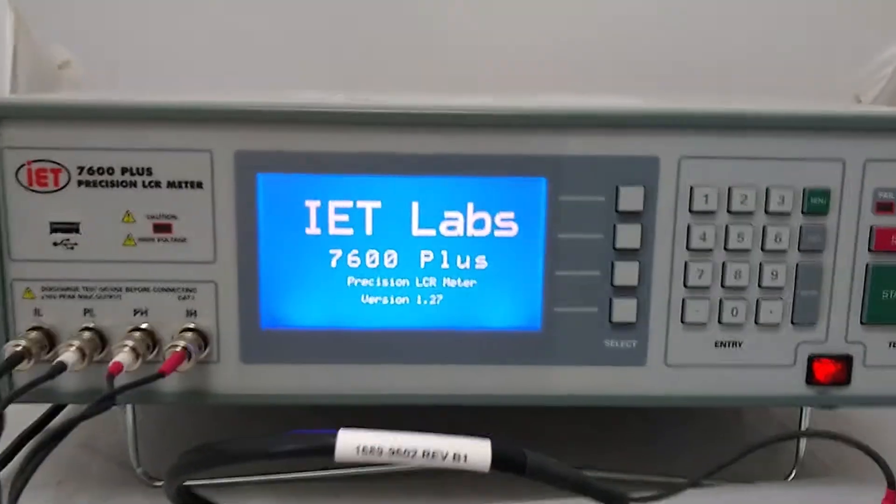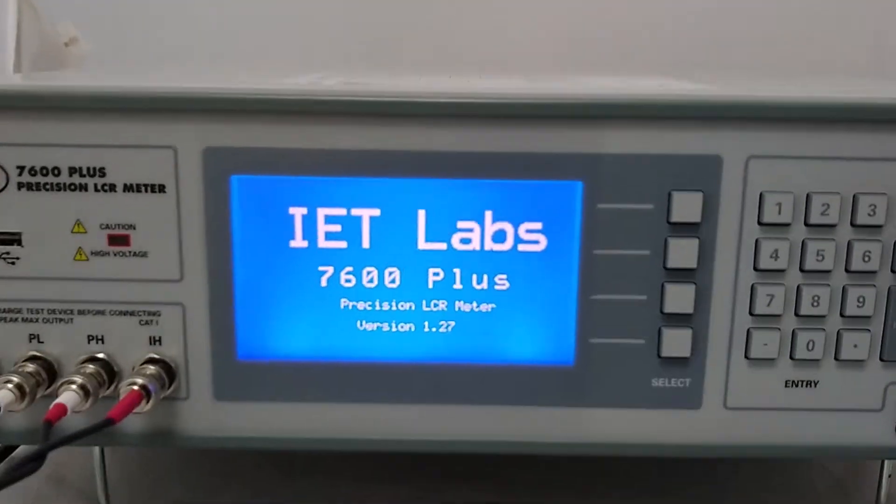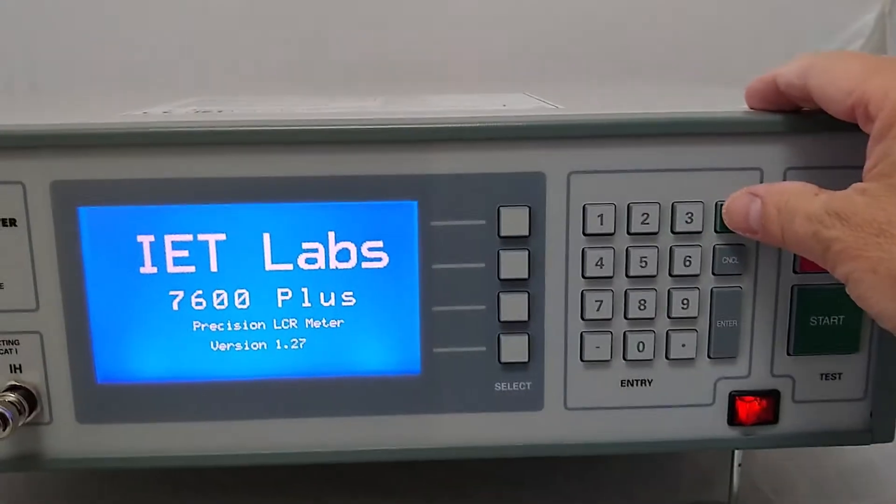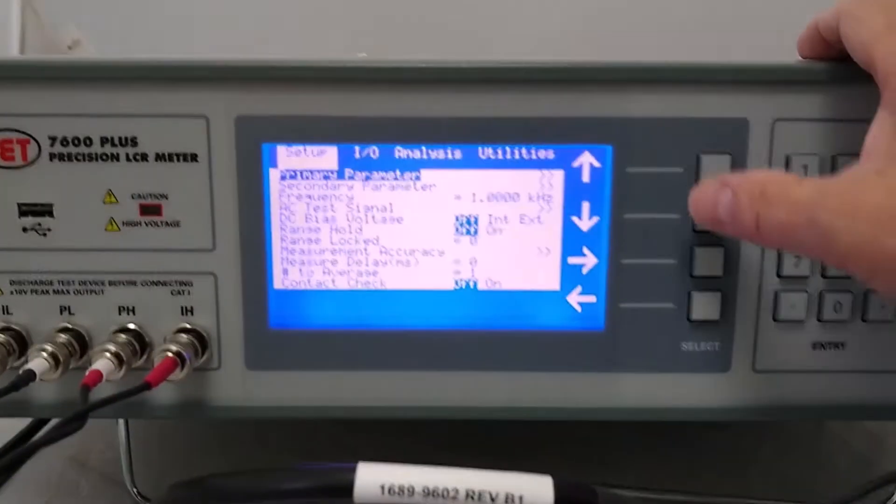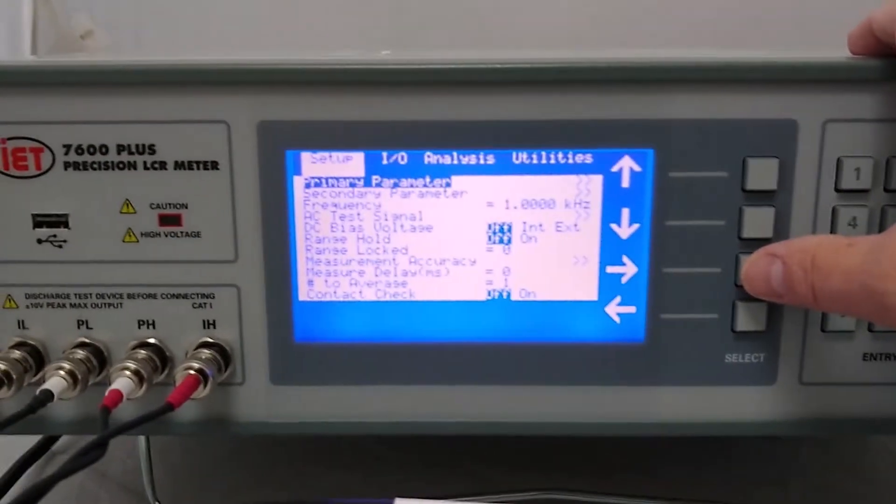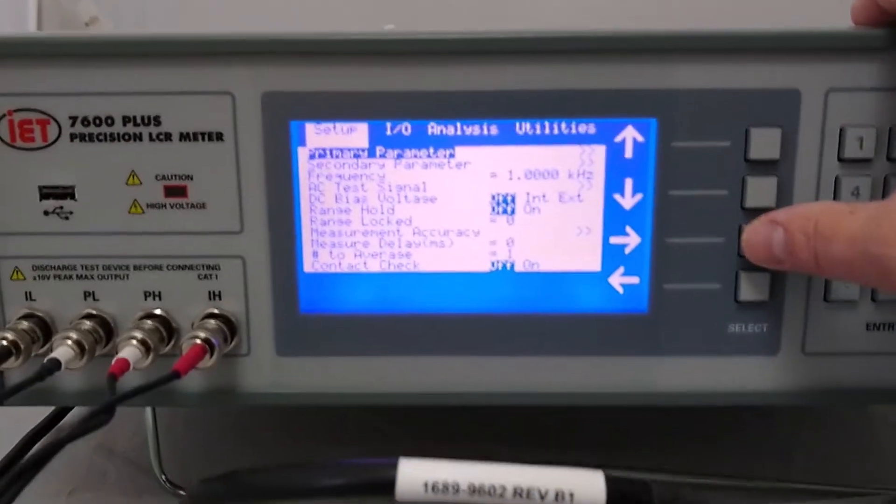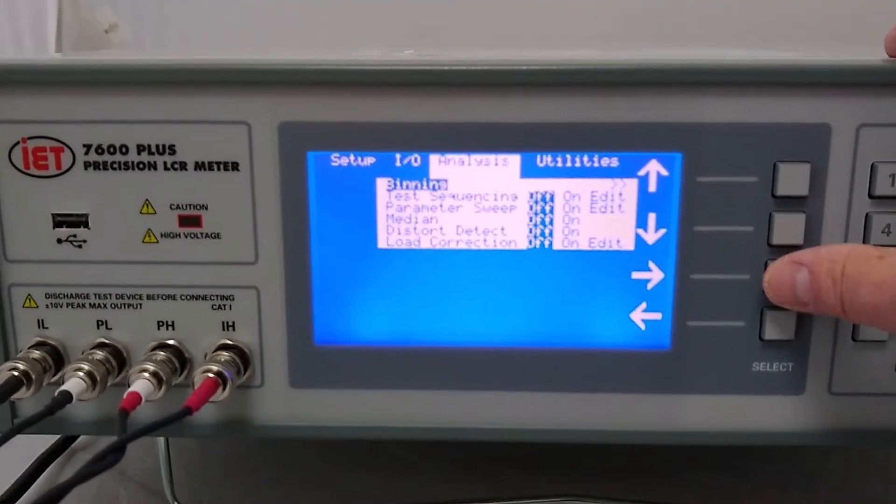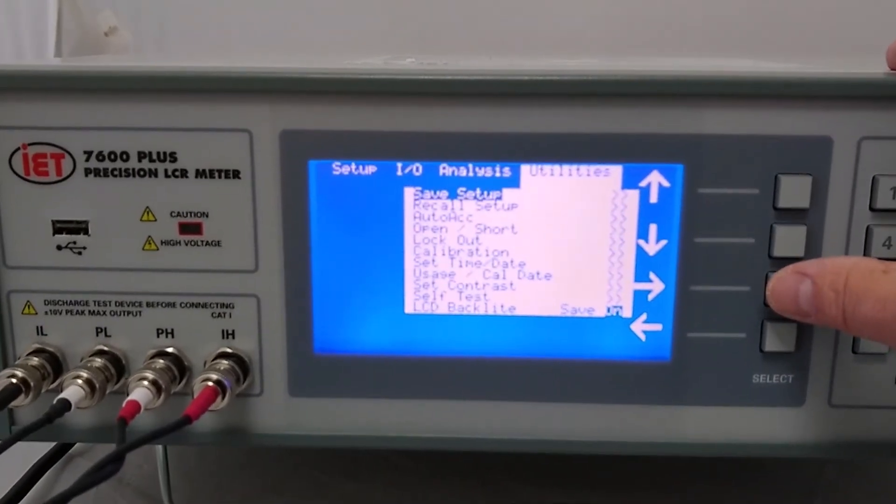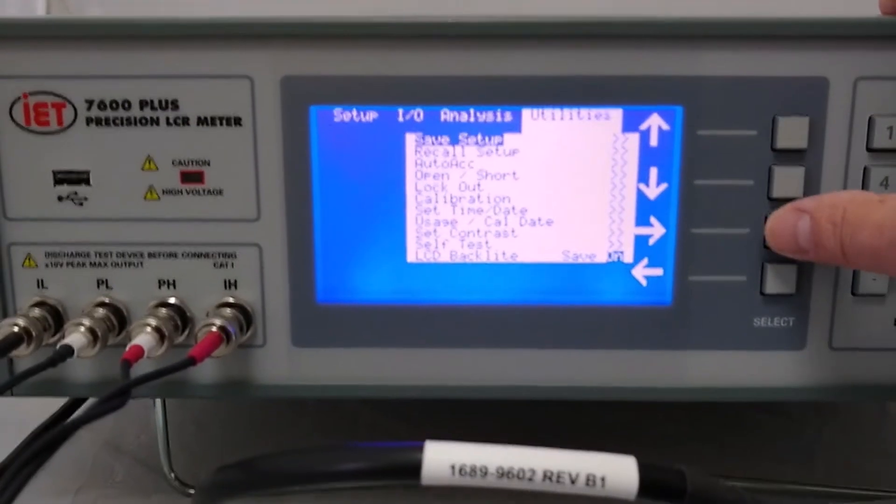The next step is to actually configure the 7600 Plus by first pressing the menu button. This allows you access to the four menus within the 7600 Plus which is setup, IO menu, analysis menu, utilities menu which we'll do open and short and we'll do that in just a moment.